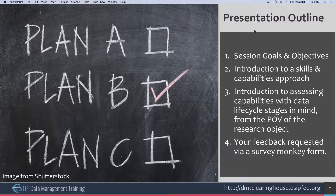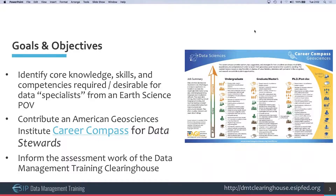In terms of the outline, we'll talk about goals and objectives for this session, introduce you to a skills and competencies approach, and discuss a different perspective of assessing capabilities with data life cycles in mind — from the point of view of the research object. We'll also request your feedback through a survey form at the very end.